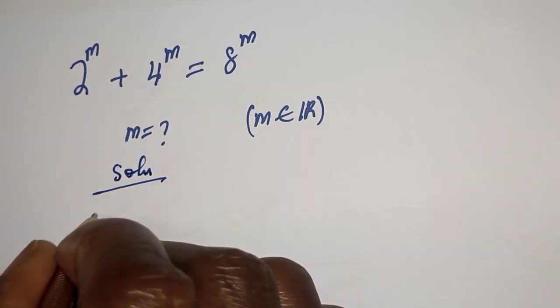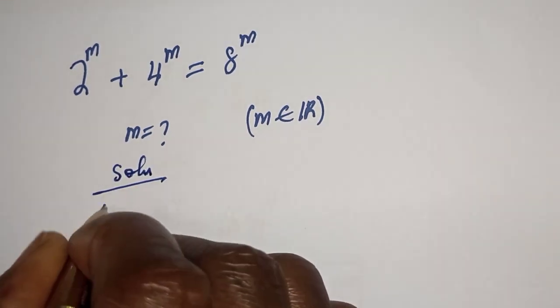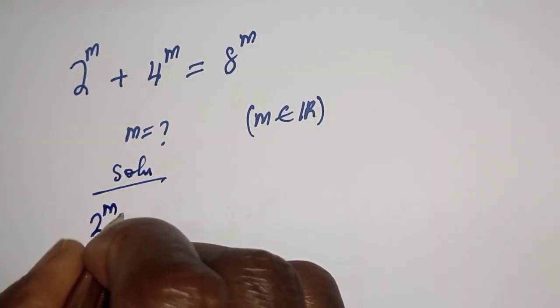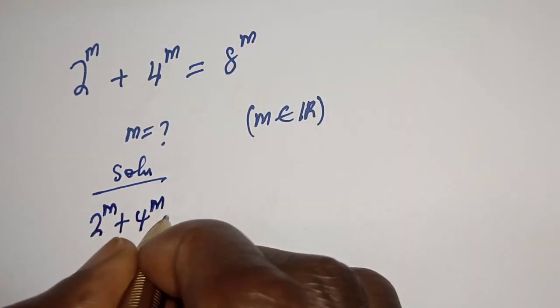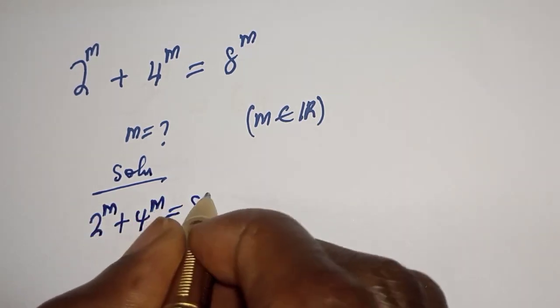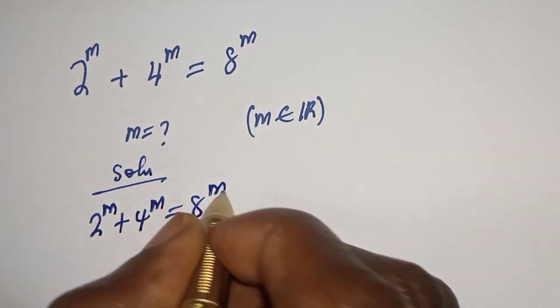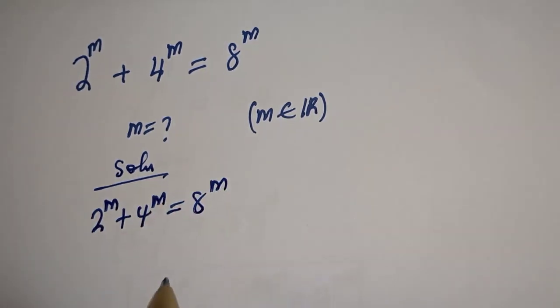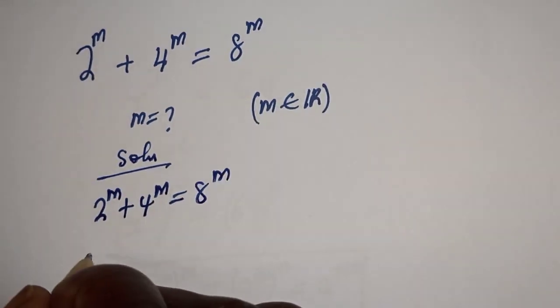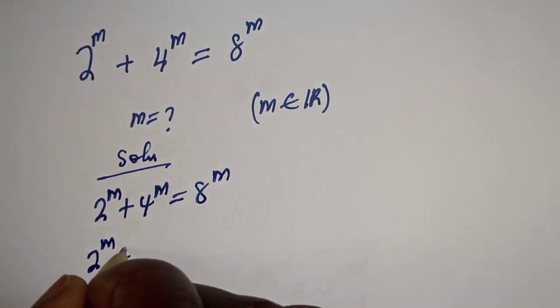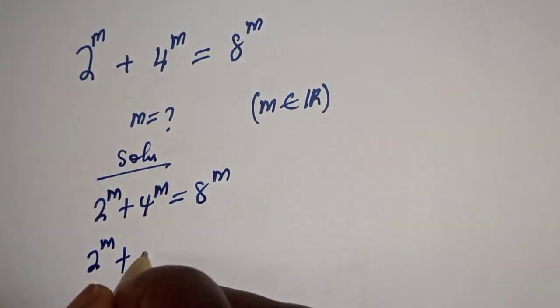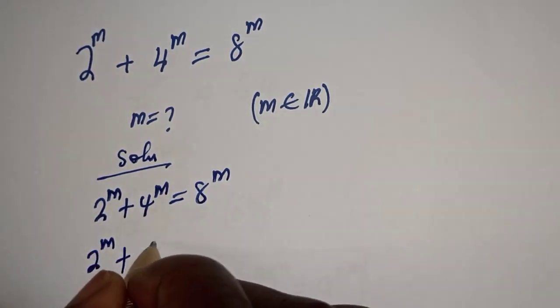We have the given equation: 2 raised to power m plus 4 raised to power m is equal to 8 raised to power m. Then 2 raised to power m plus 4 raised to power m can be written as...